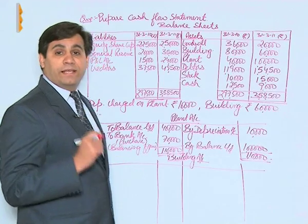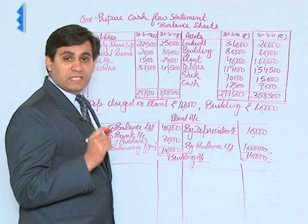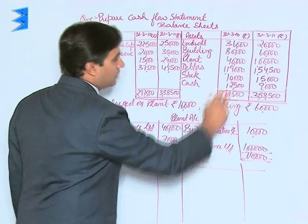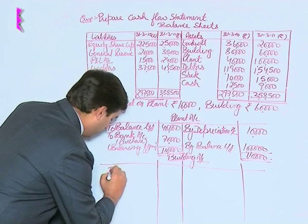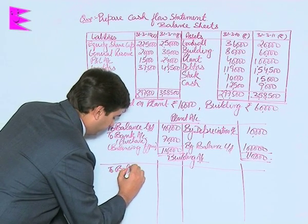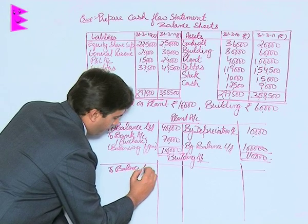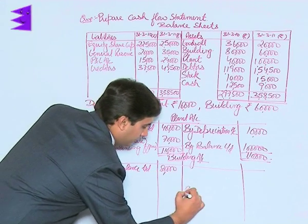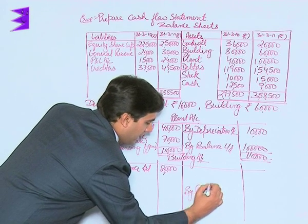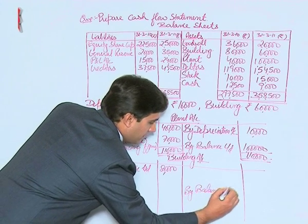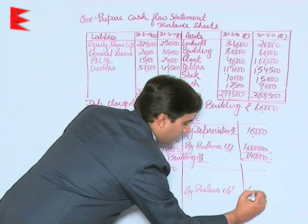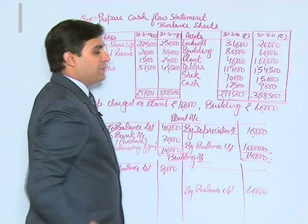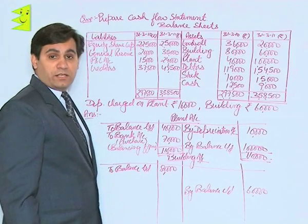Now we prepare the building account. The same concept applies — building is an asset. It has an opening balance of 80,000 and a closing balance of 60,000. We write balance brought down 80,000 as opening balance, and the closing balance carried down is 60,000. During the year, depreciation of 60,000 has been charged.